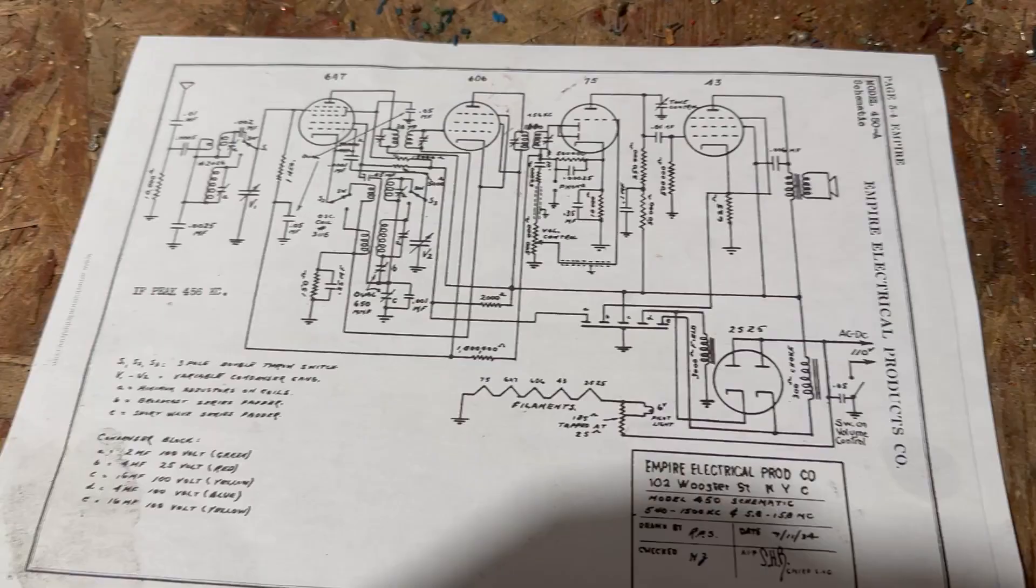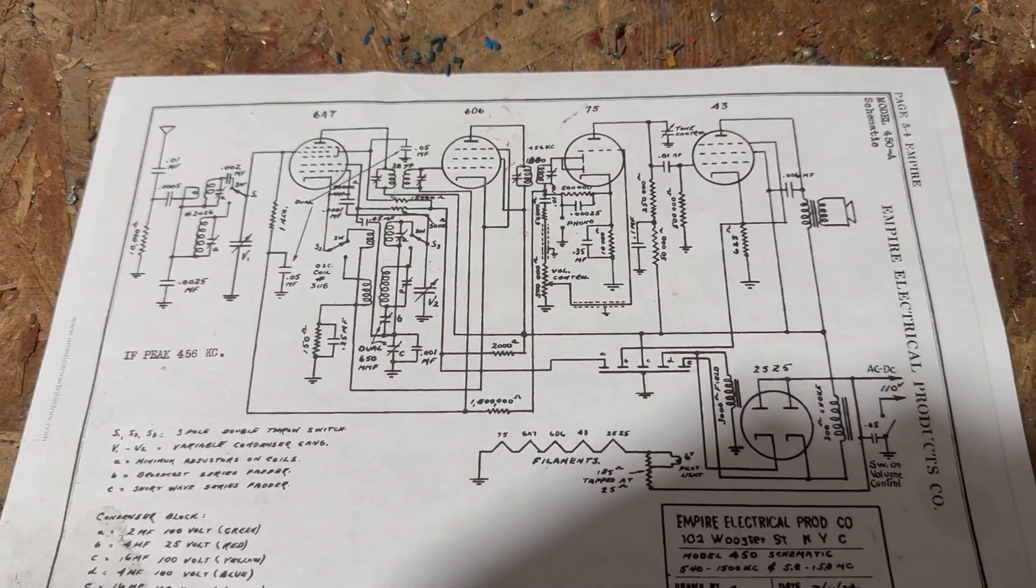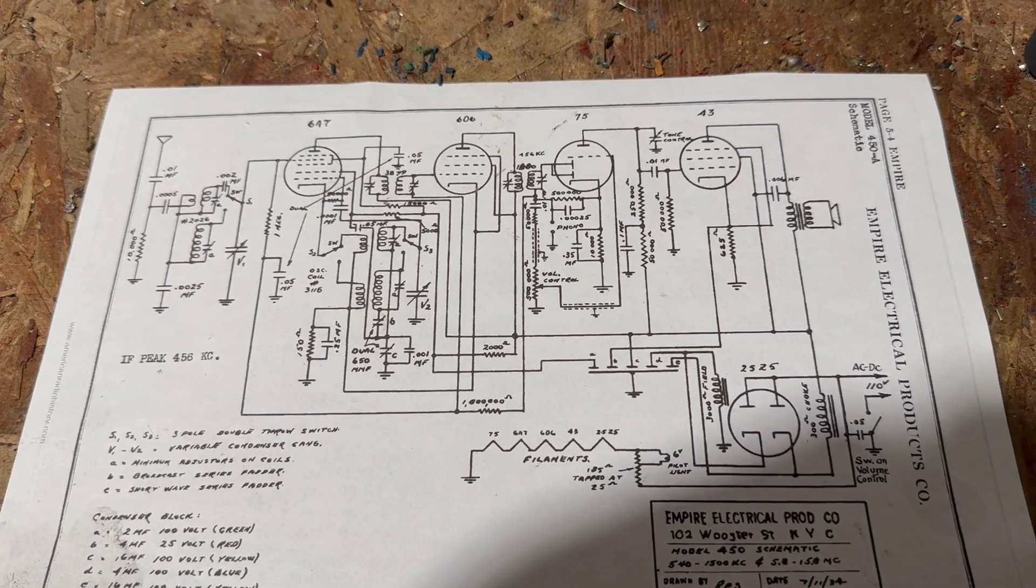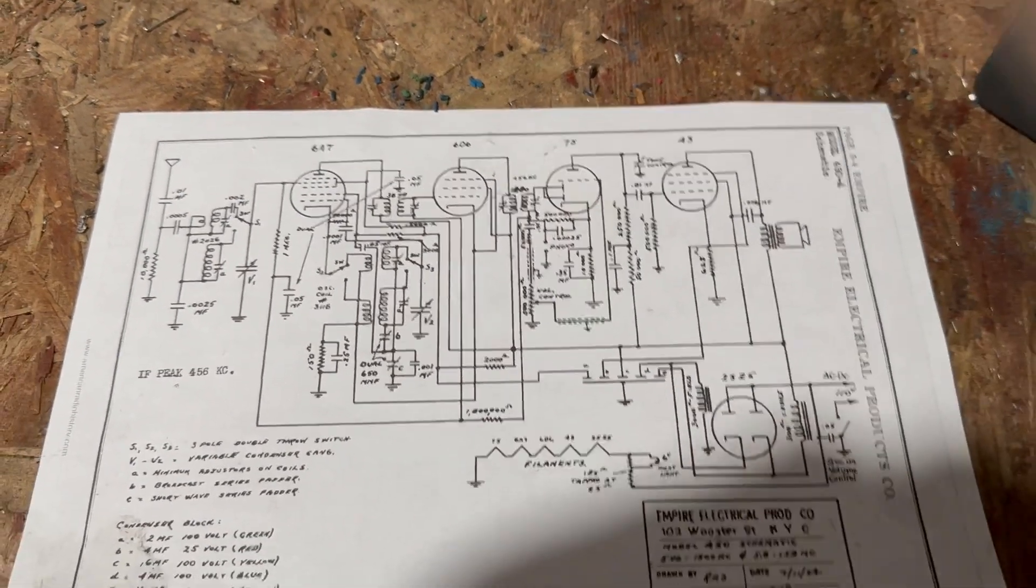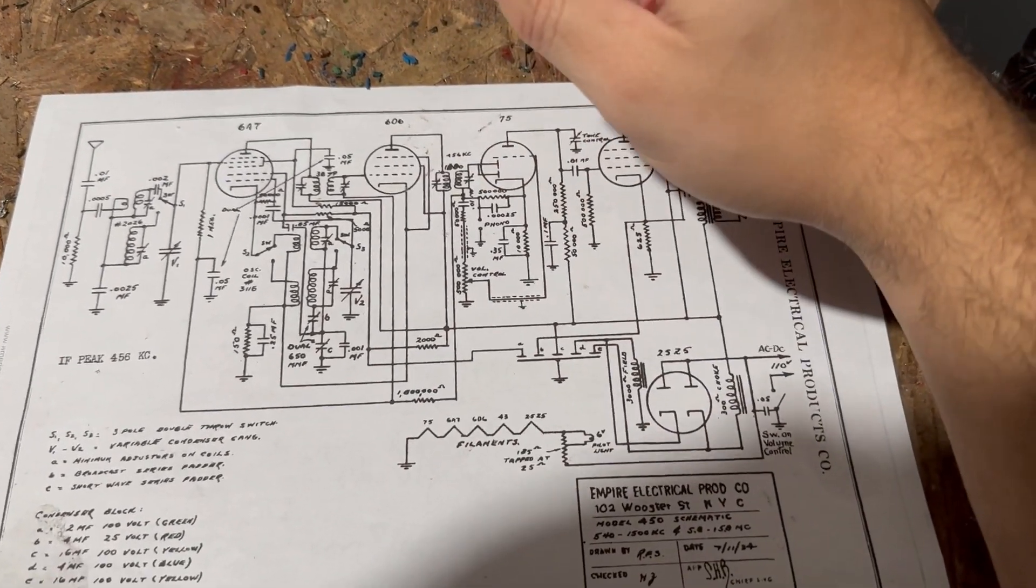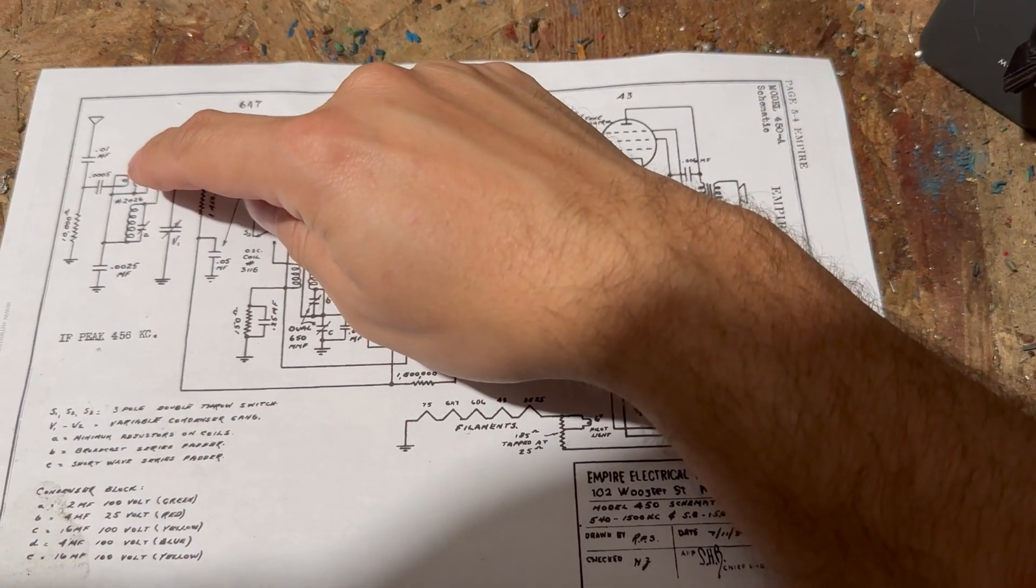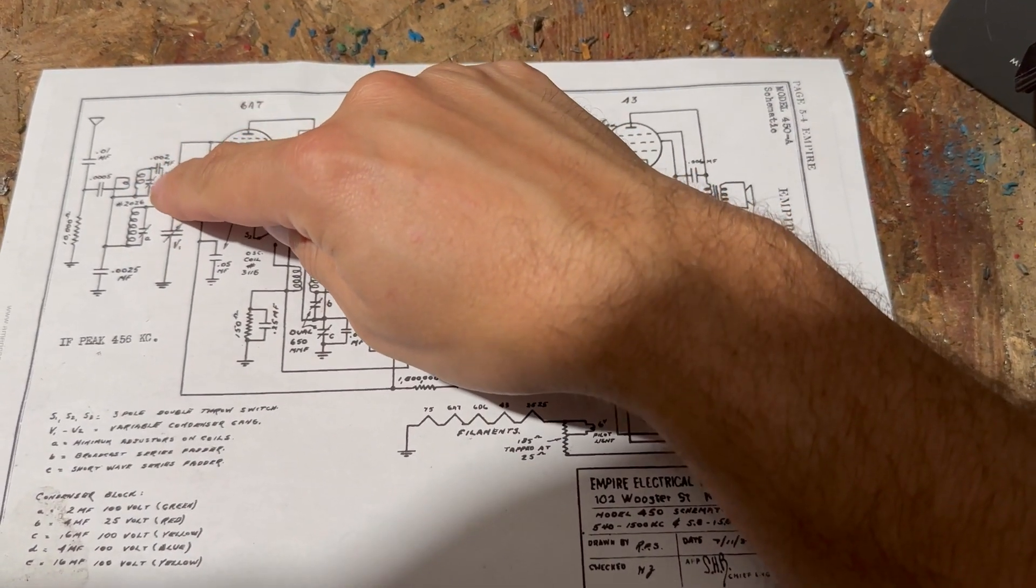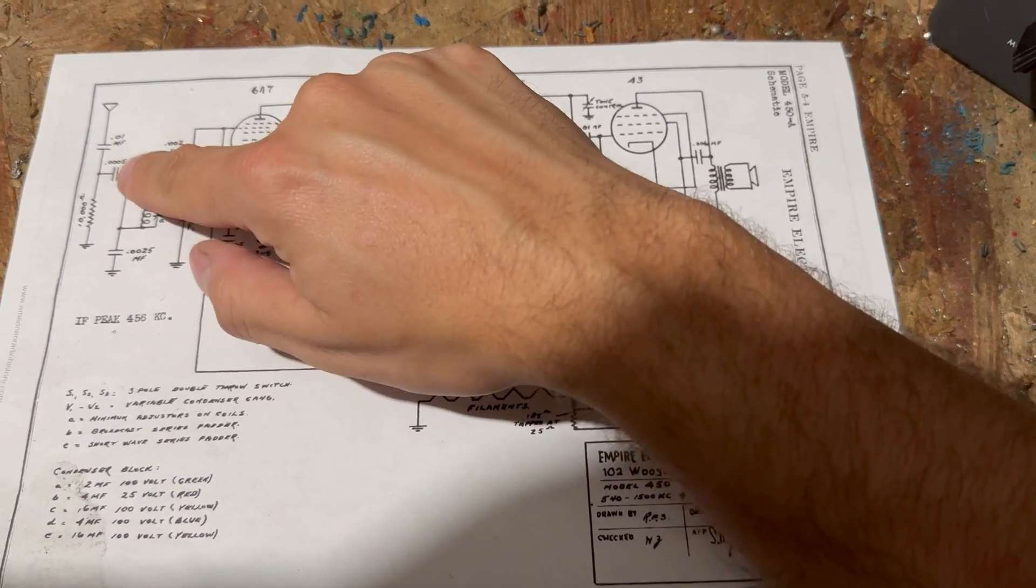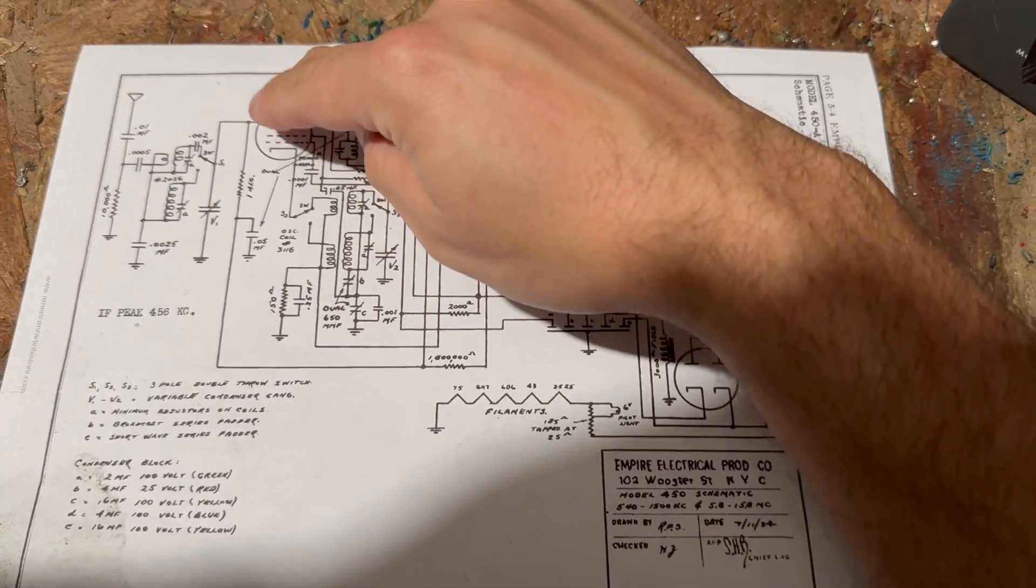I have this schematic here. This is just a radio I was working on that I could never get to work. You know, sometimes you can't win at all of them. Anyway, what ends up happening here is you have the signal coming through the antenna.